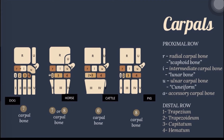The carpus in all animals is a complex region that includes two rows of small bones. The carpal bones in the proximal row are named from medial to lateral: R or radial carpal bone, also called scaphoid bone; I or intermediate carpal bone, also called lunar bone; U or ulnar carpal bone, also called cuneiform; and A for accessory carpal bone, which projects caudally from the lateral side of the carpus. Those in the distal row are numbered 1 to 4: 1 is also called trapezium, 2 is trapezoid, 3 is capitatum, and 4 is hamatum.